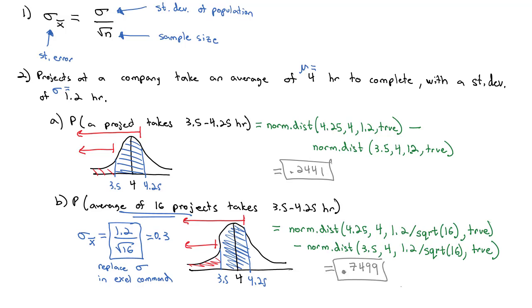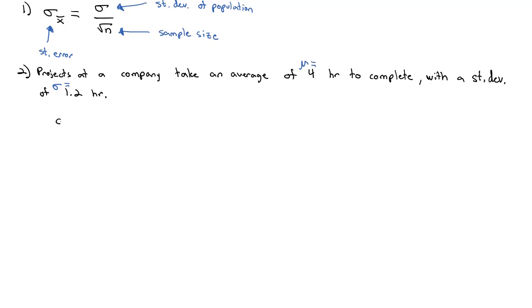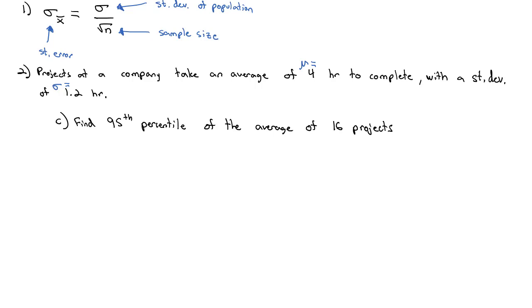By shrinking the standard deviation — by taking the average of a large group of projects — the probability has jumped to 0.74, almost 75%. Now let's do a percentile example. Let's find the 95th percentile of the average of 16 projects. Again, because we're averaging 16 projects, we're going to be using a standard error equal to the standard deviation of 1.2 divided by the square root of the sample size.